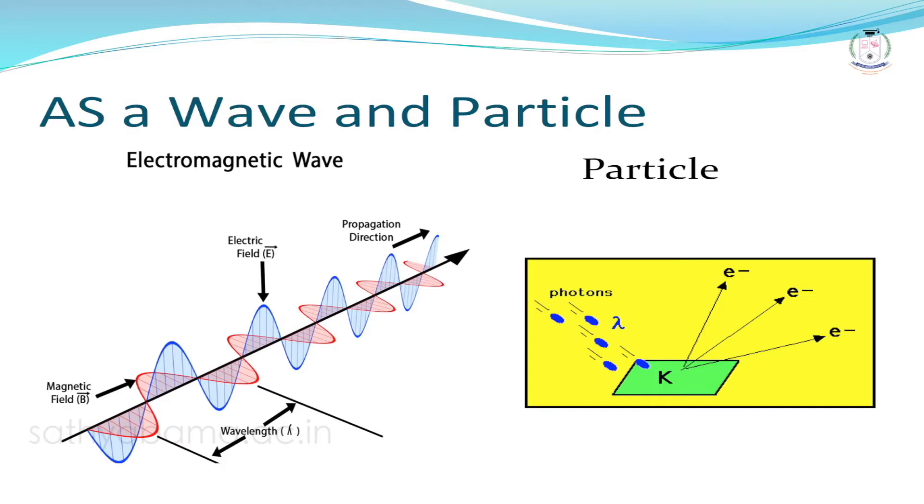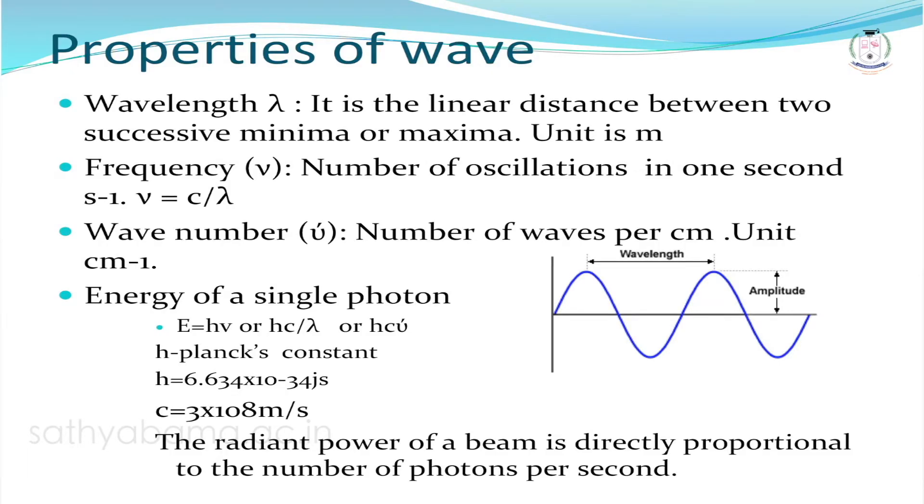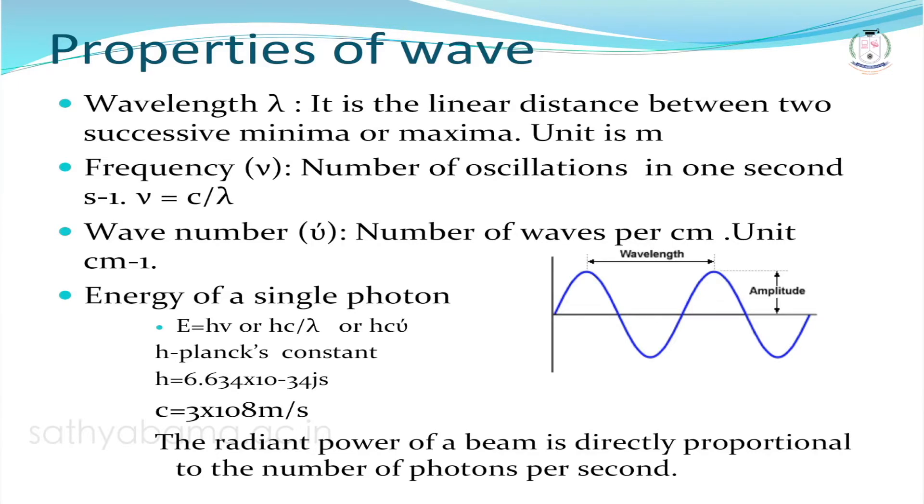The wave nature of electromagnetic radiation is explained in terms of wavelength, frequency, and wave number. Frequency is the number of oscillations that occur in one second, and its unit is second⁻¹. Wavelength is the linear distance between any two successive maxima or minima — the maximum is called the crest and the minimum is called the trough — and its unit is centimeter, meter, or nanometer.